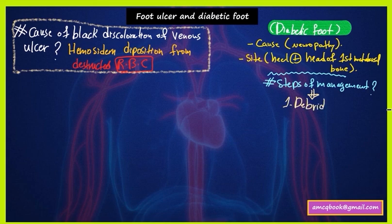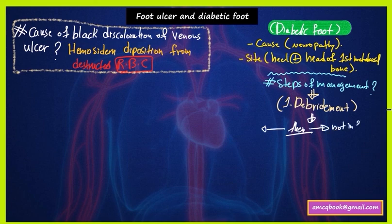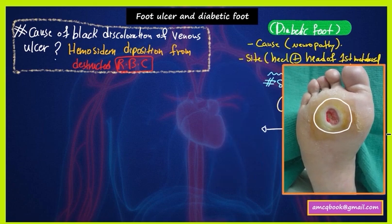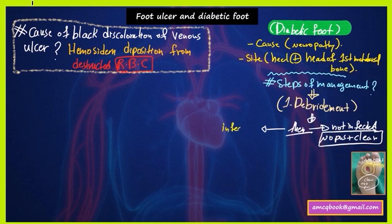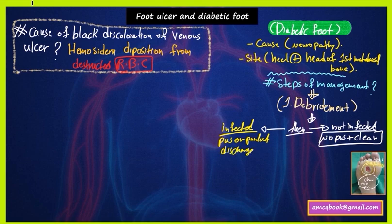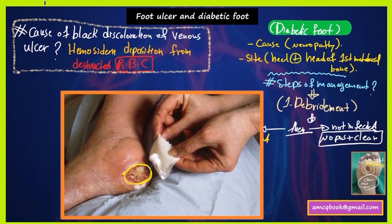For the management of diabetic foot, the first step is debridement of dead tissue. After that, if the area is not infected — meaning there is no pus and the area is clear — the only treatment is debridement then dressing, with no antibiotic needed. But if there is an infected ulcer with pus or purulent discharge, then the treatment is debridement first, then dressing along with antibiotic use.